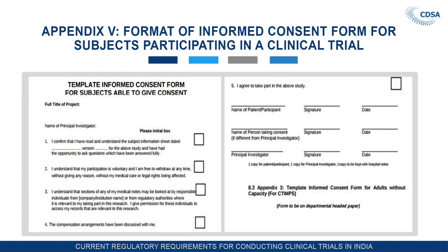The subject has to tick mark in the box and give initials for every element listed. Below, the name of the participant, signature, and date of enrollment must be written. All these details must be filled in and given to the PI.